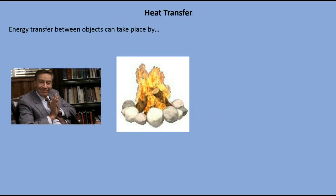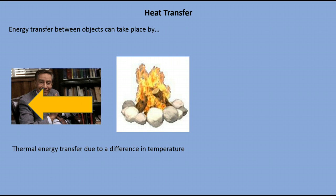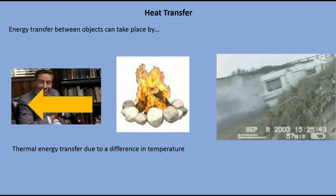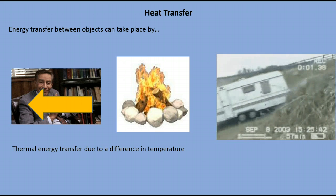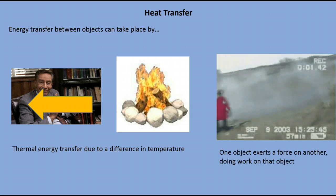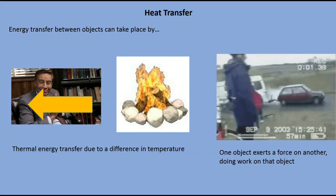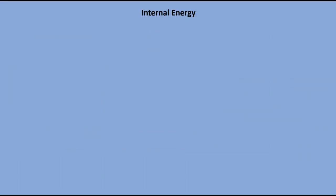If we're looking at ideas of energy and internal energy, we need to think about ways in which we can transfer energy between objects. There are two main methods: one is through thermal energy transfer — thermal energy moving from a hotter to a colder region due to the difference in temperature between two objects. Another way is by having an object do work on another object; for example, the car is doing work on the caravan by pulling it along.